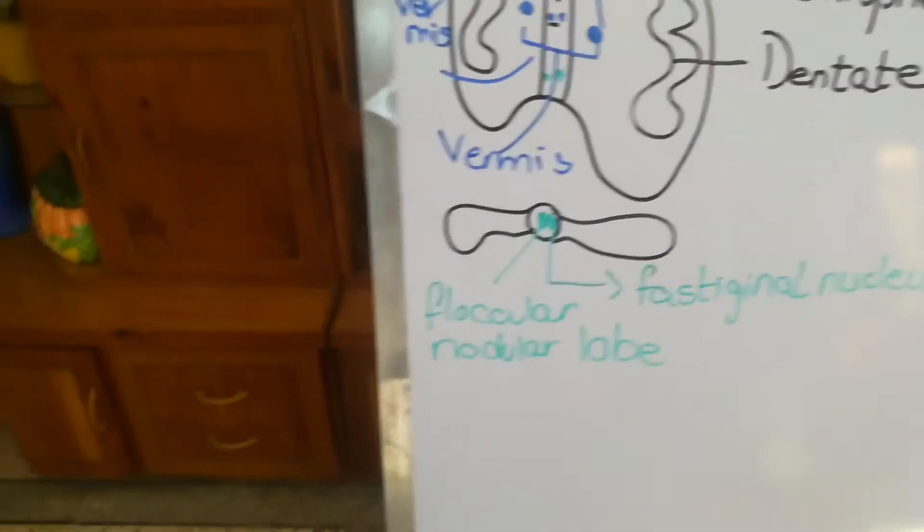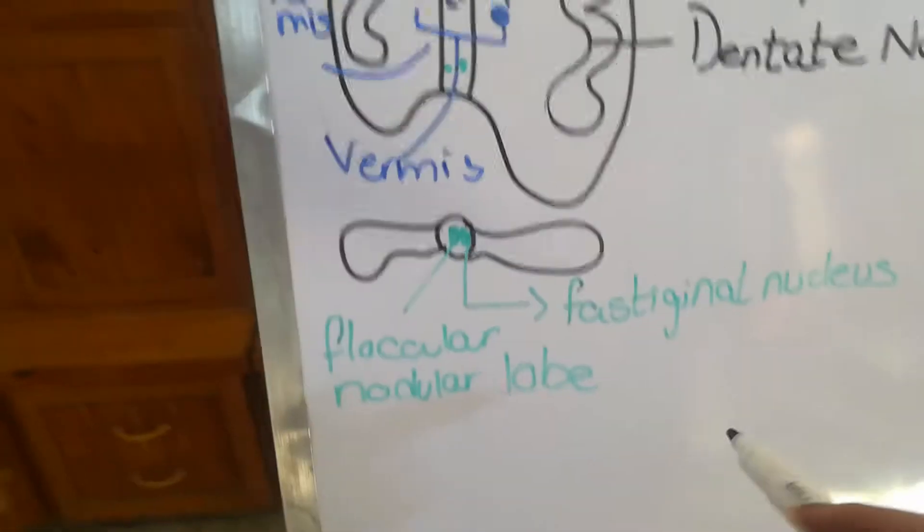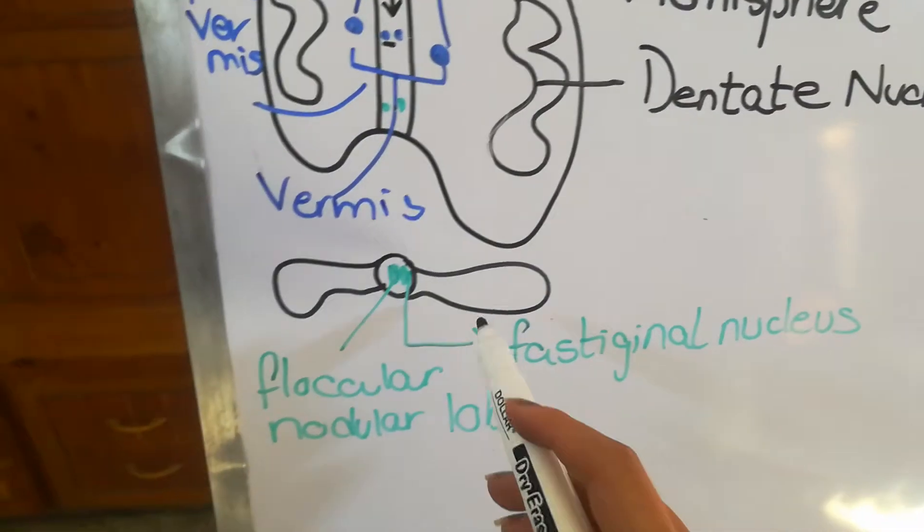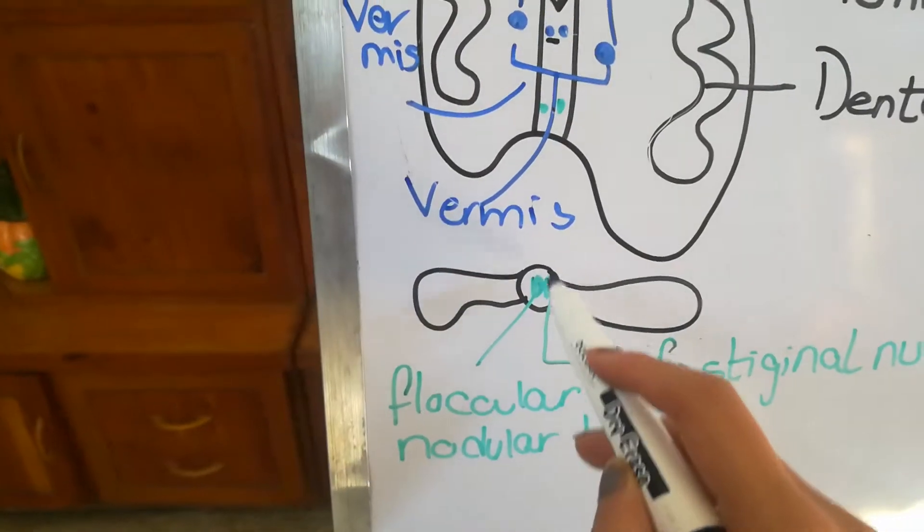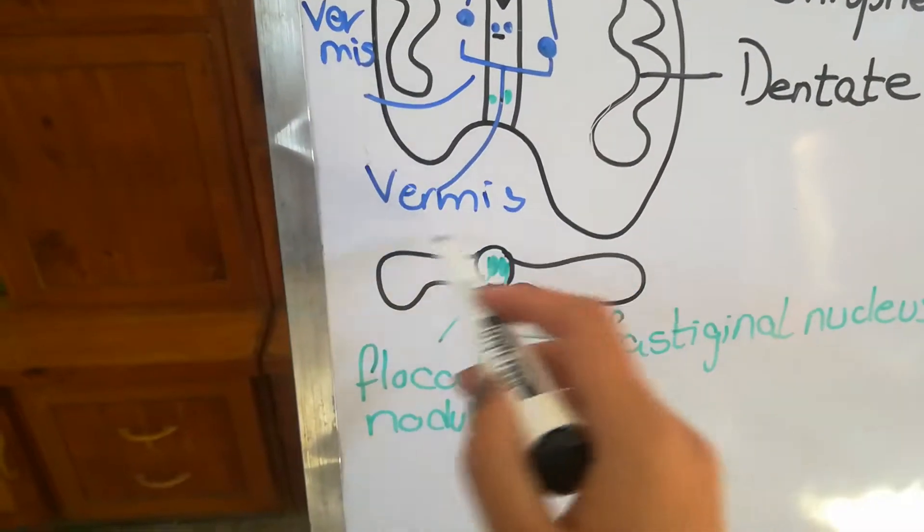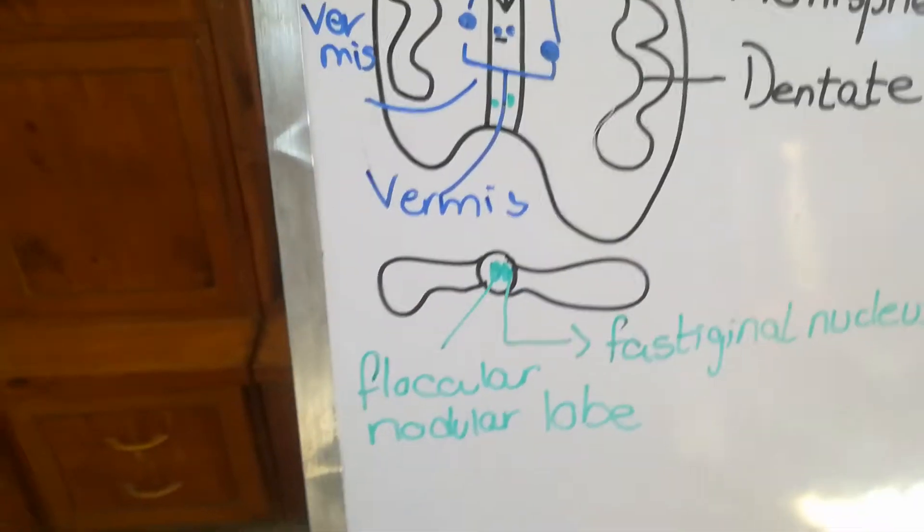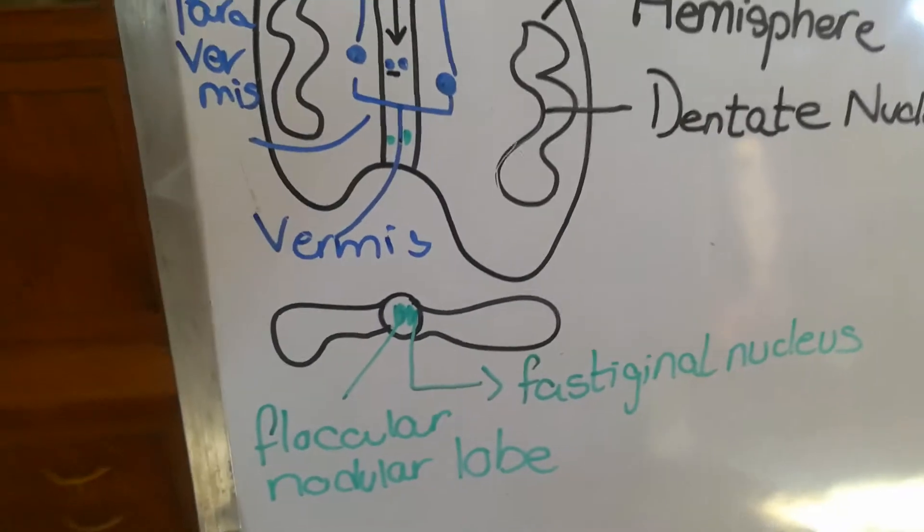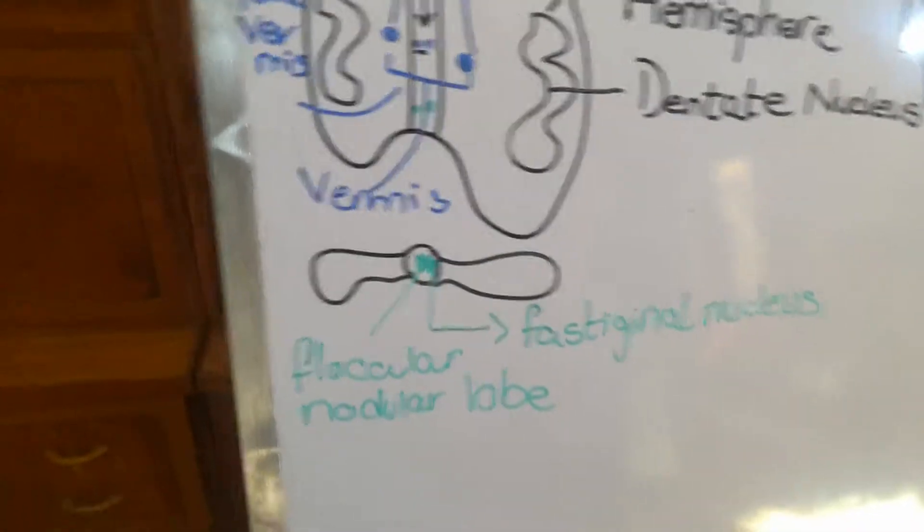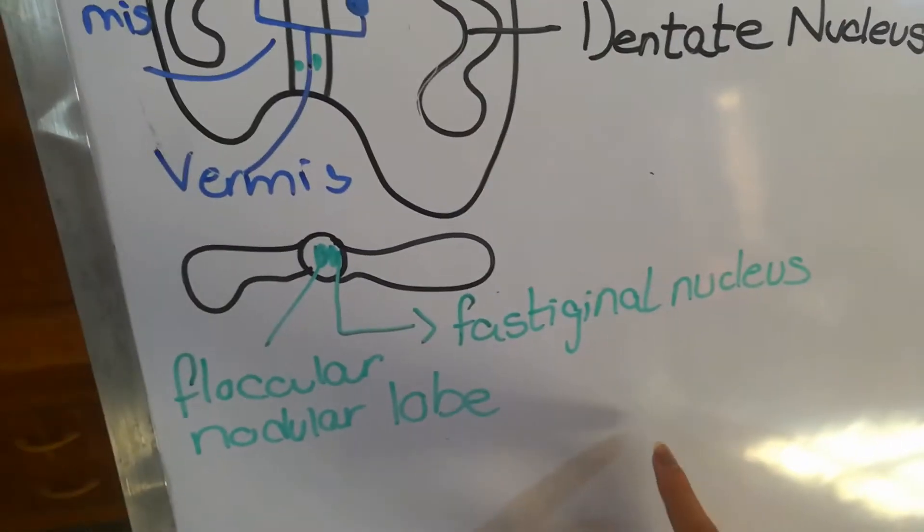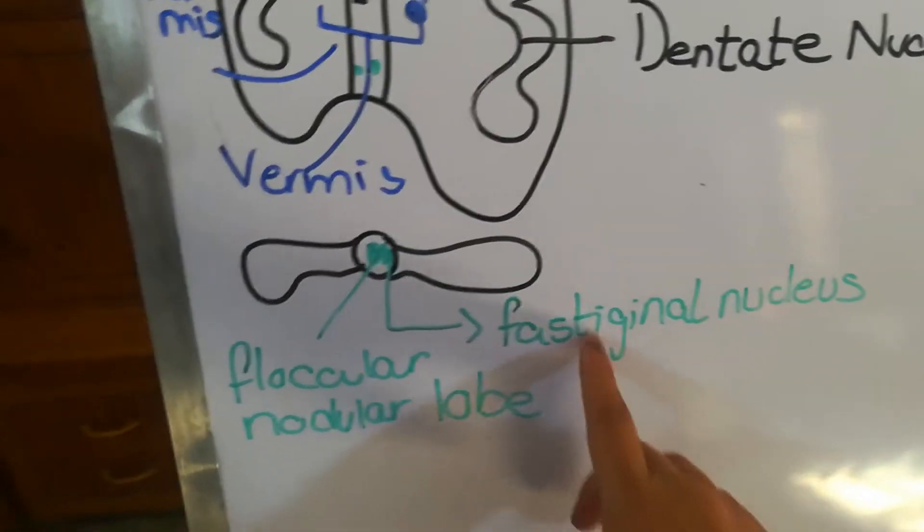The emboliform is located in the paravermal area. The last nucleus is the fastigial nucleus (F comes at the end of our mnemonic). The fastigial nucleus is oval-shaped, shown here with the green marker. It's located in the flocculonodular lobe of the cerebellum. However, recent research suggests that the fastigial nucleus is not only located in the flocculonodular lobe.